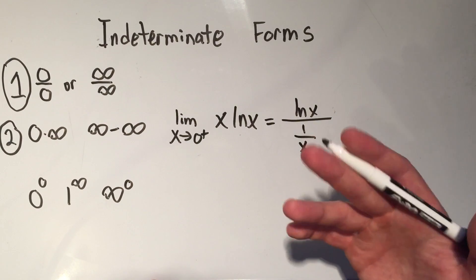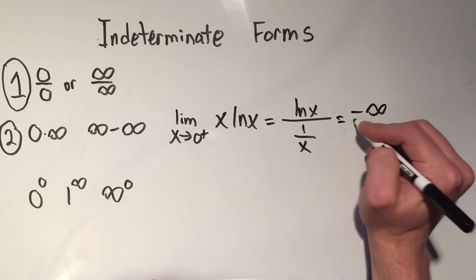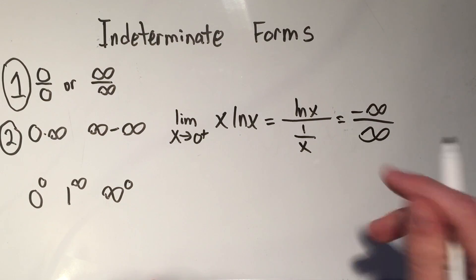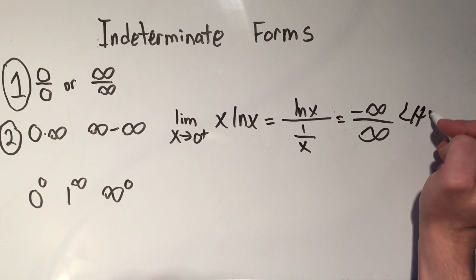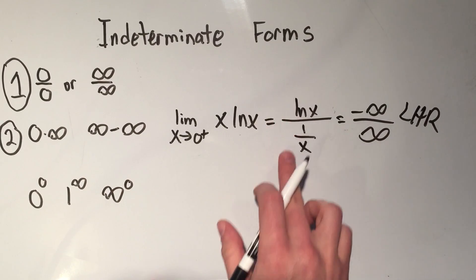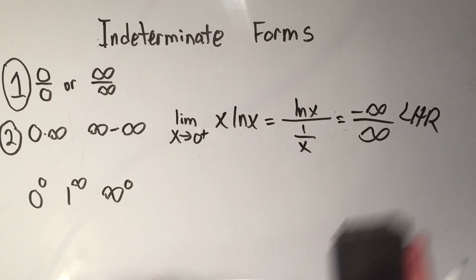But now the thing is, if I plug in zero, I'm getting negative infinity, and now one over zero is infinity. Ah, I'm back at stage one, I can just do L'Hôpital's rule. So whenever you see zero times infinity, you write it as a fraction by writing one over one of the functions.